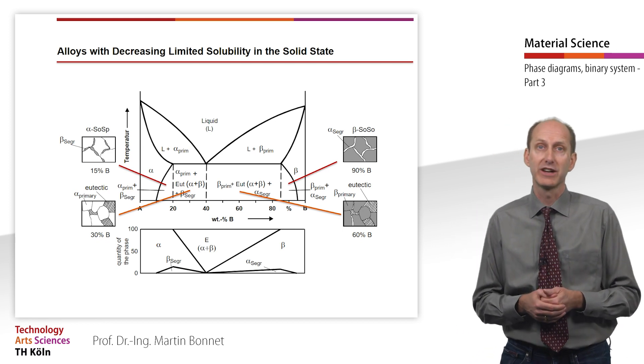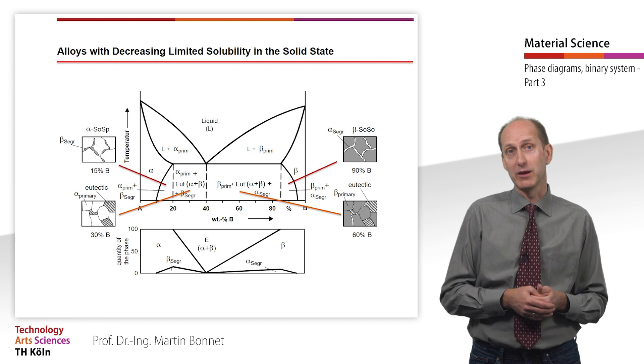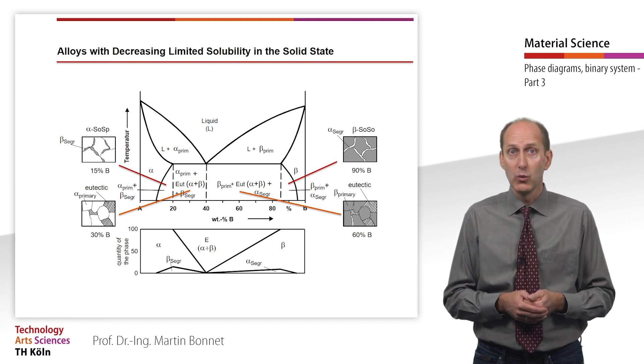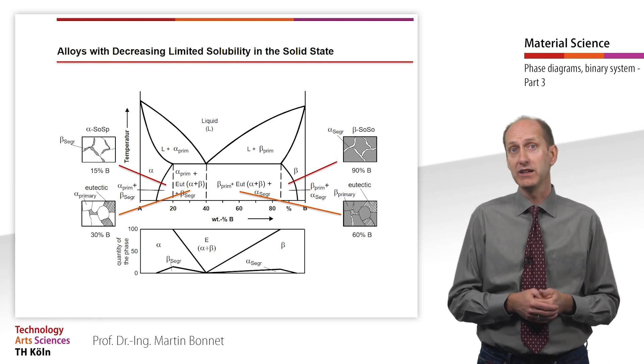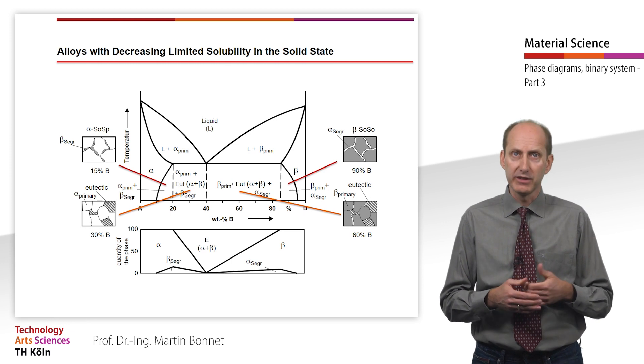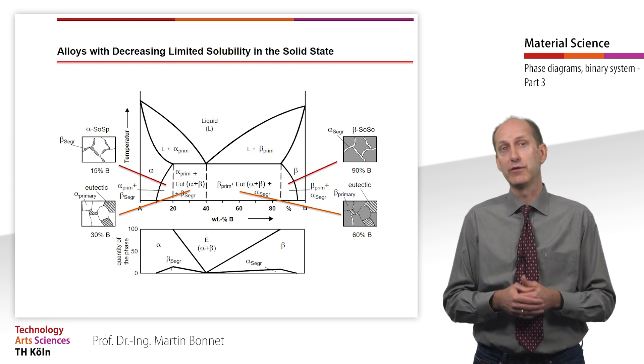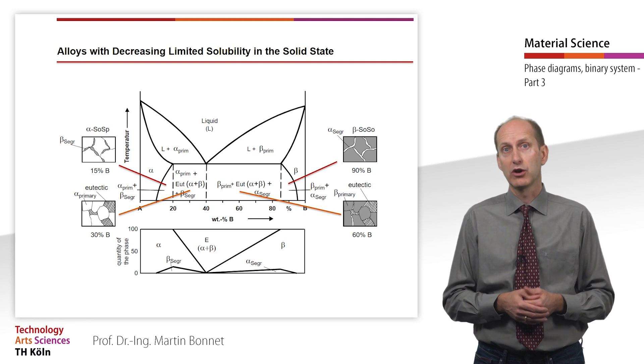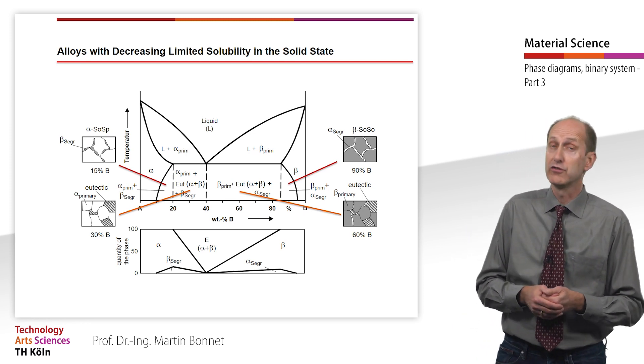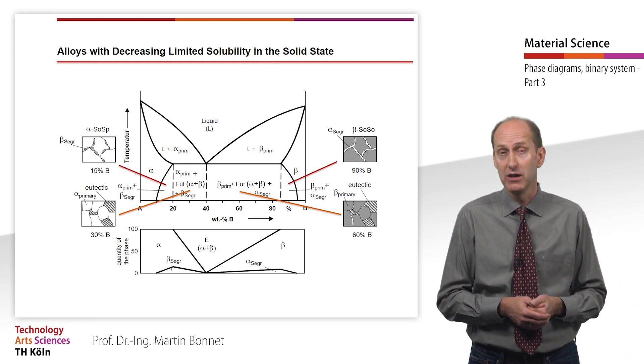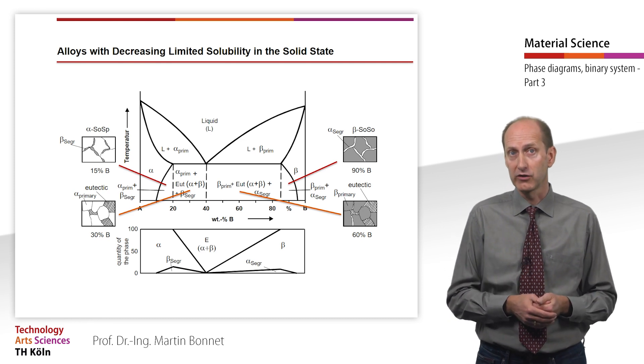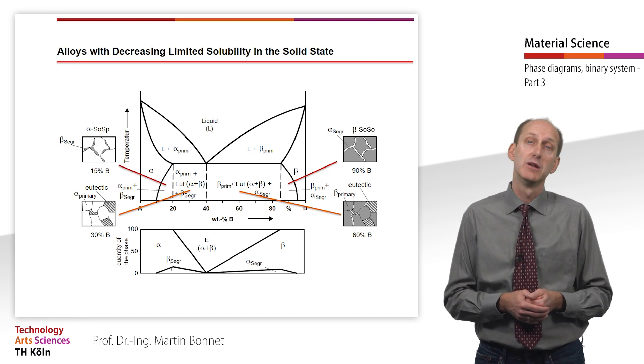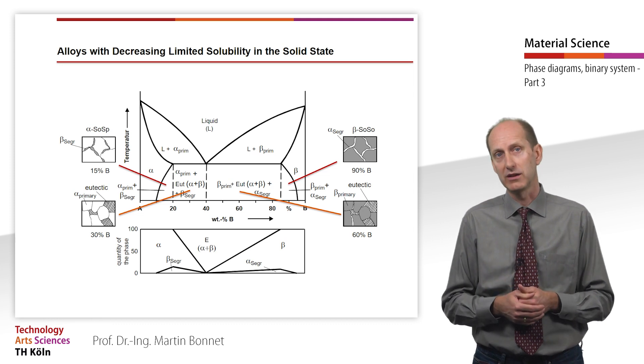If we look at a microstructure with 15% B in the figure shown, we will find beta segregate that has precipitated at the grain boundaries next to the alpha solid solution. According to the lever rule, concentrations higher than 20% B will also exhibit beta segregate at the grain boundaries besides alpha solid solution and eutectic.